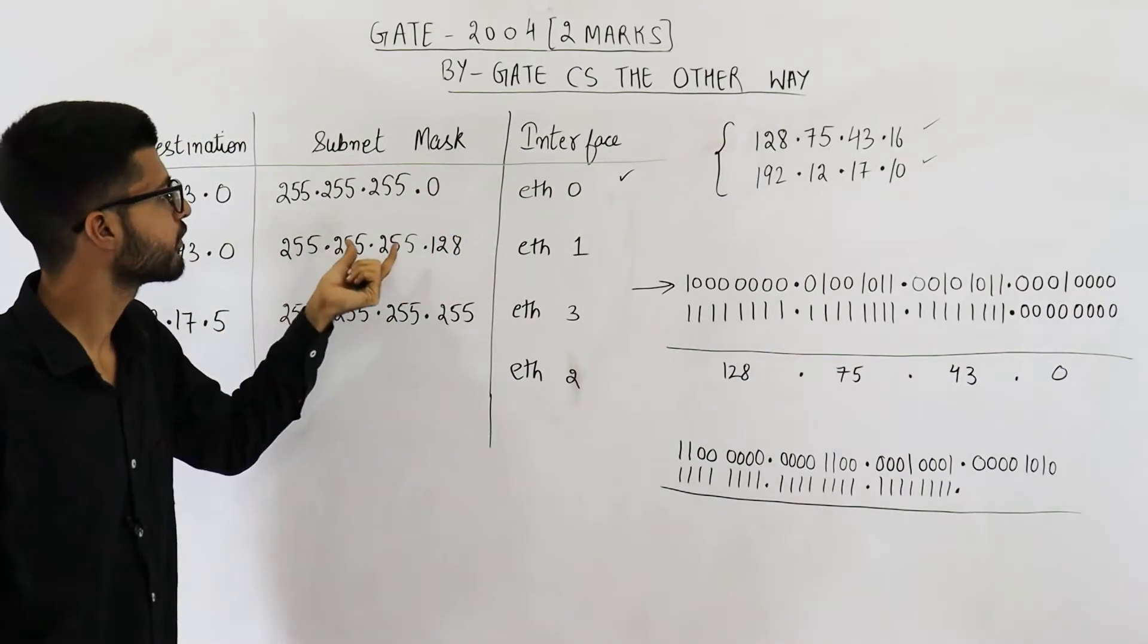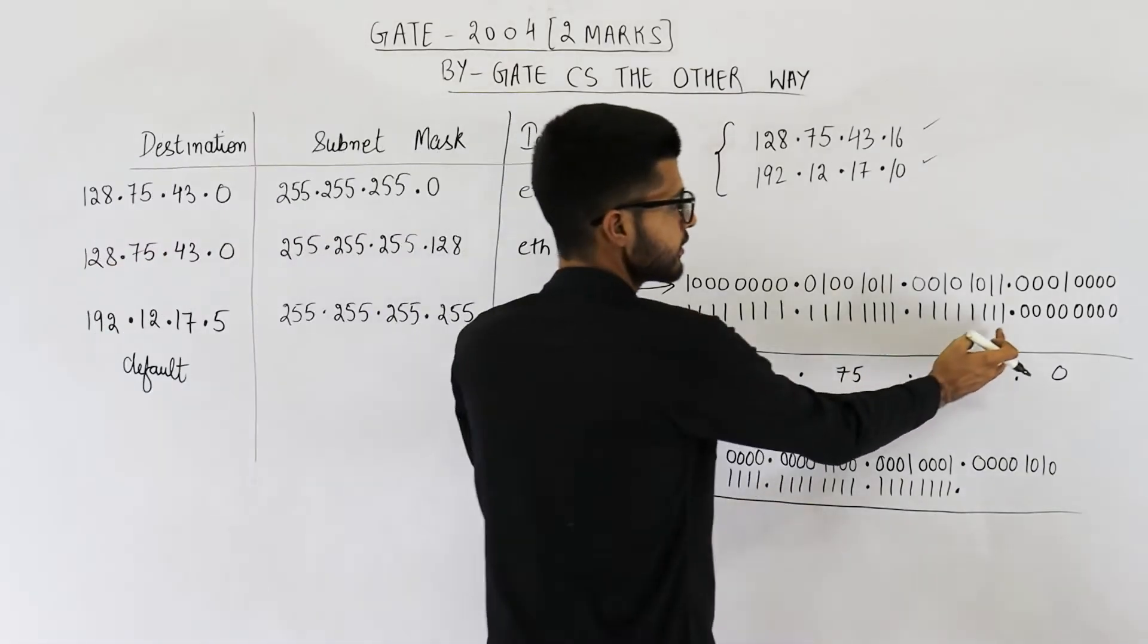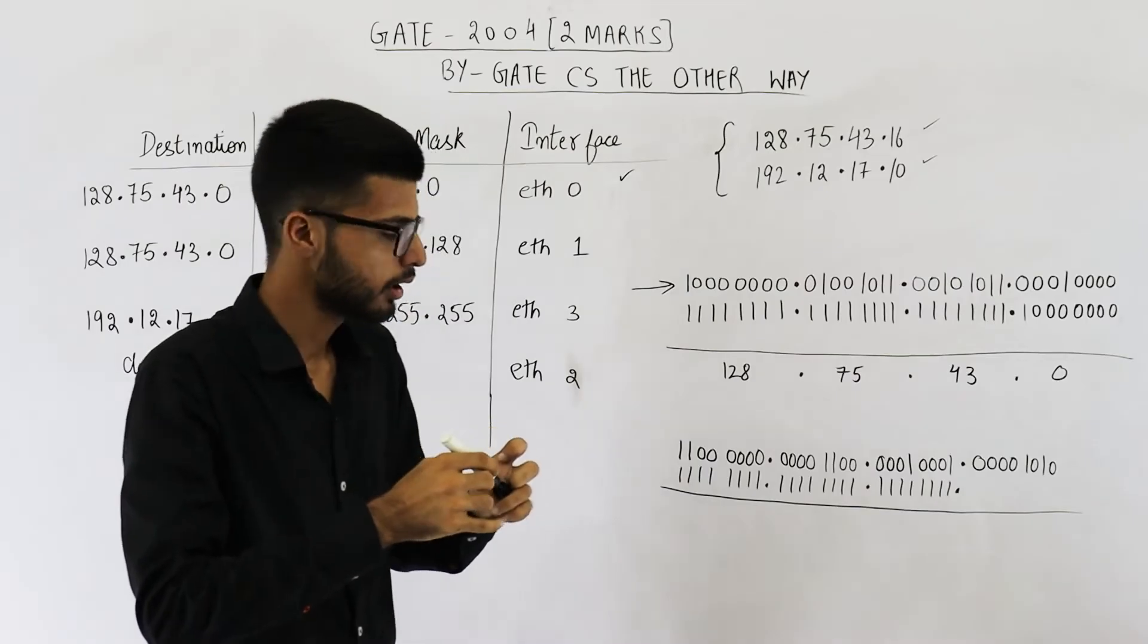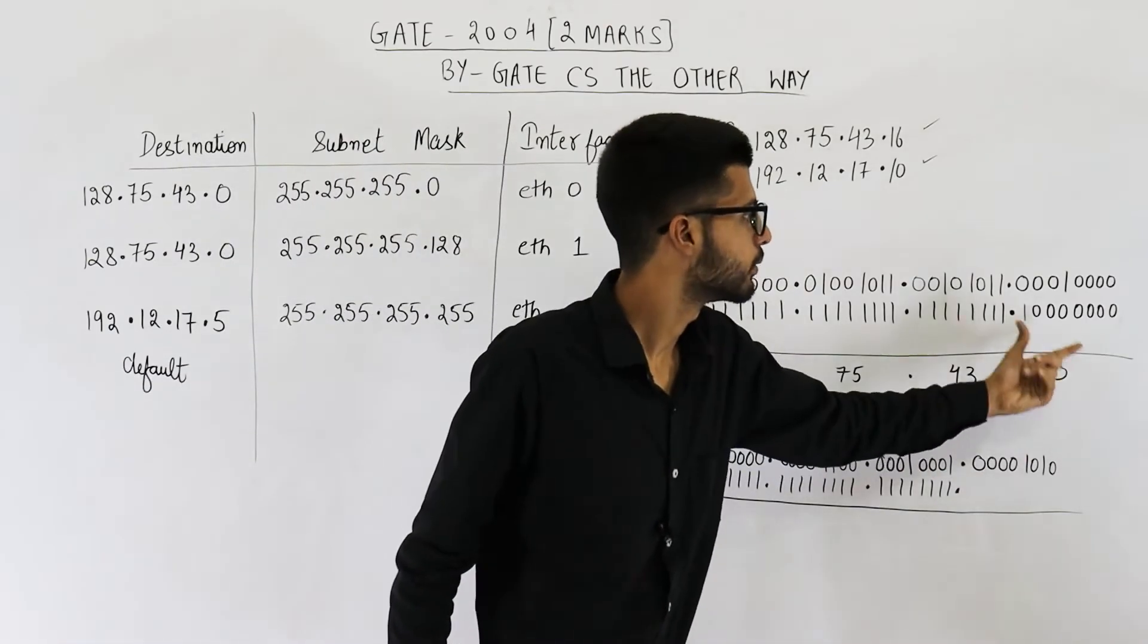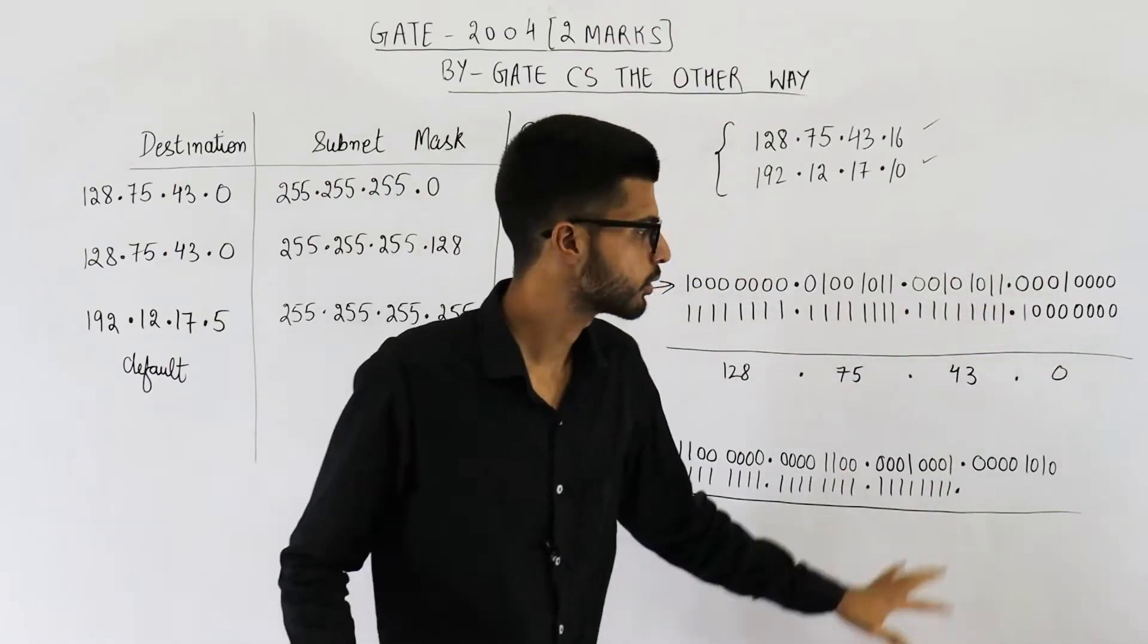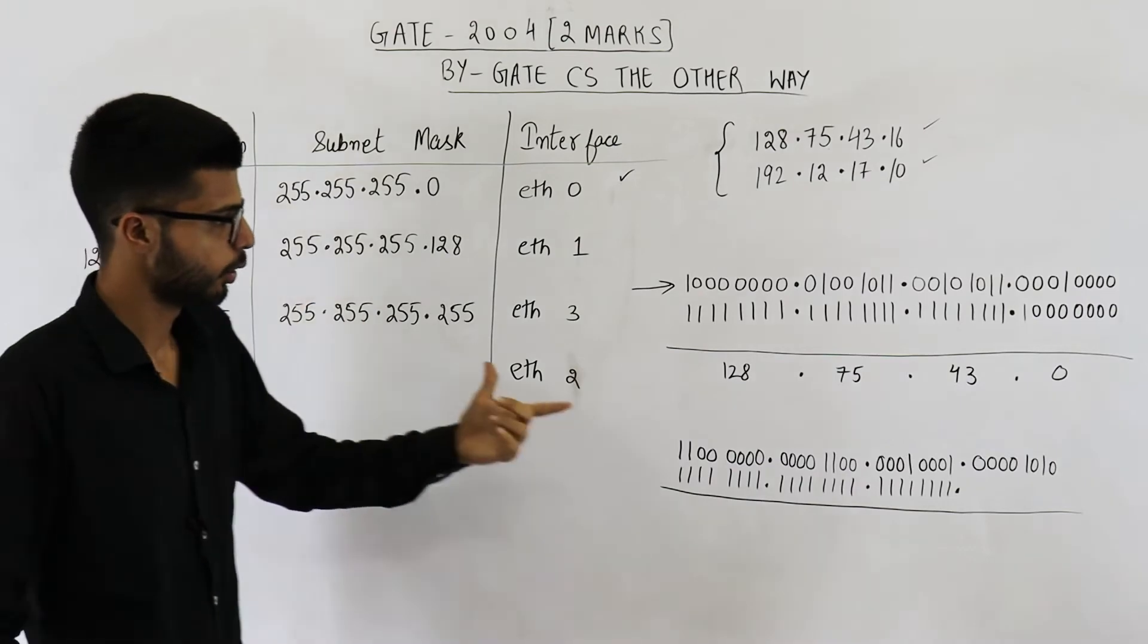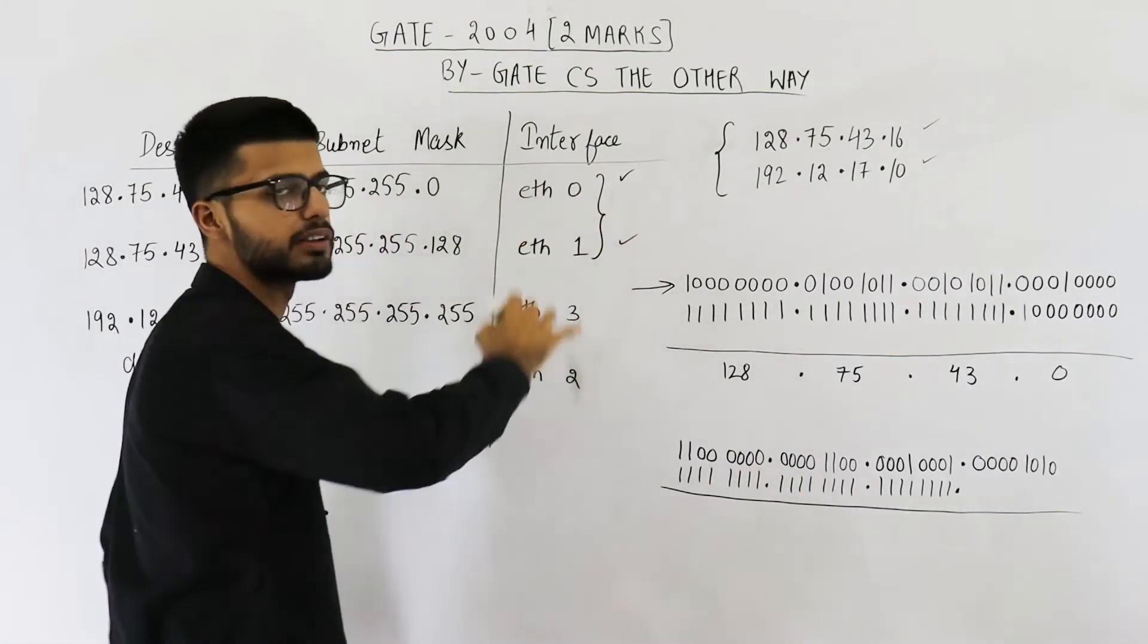It is 255.255.255.128. So first three octets are same. Just we have 128 here. So I'm writing 128 in subnet mask. Now, if you perform AND of both of these, you are going to get this result only because 0 and 1 is 0 only. So there will be no change.